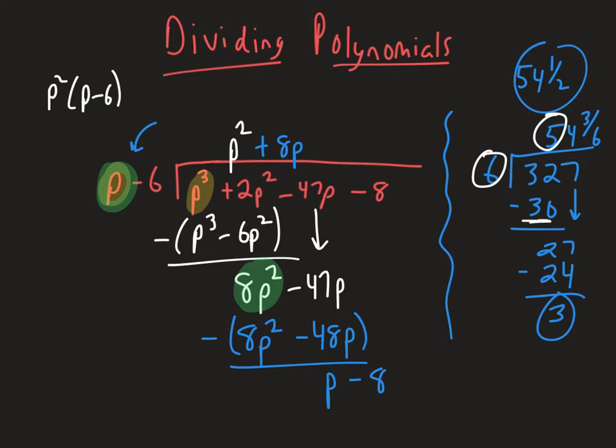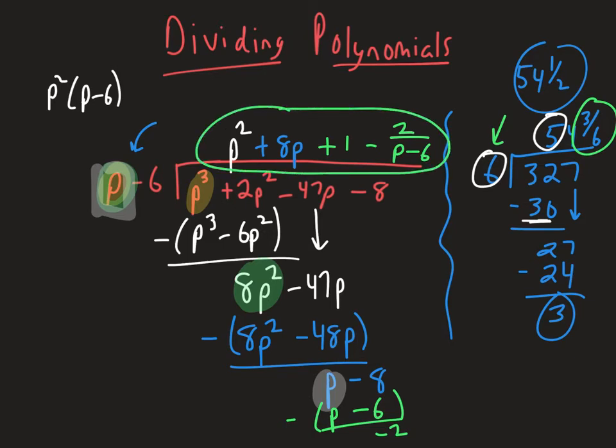And one more time, I'm going to see how many times does this p go into p. p goes into p one time. We'll multiply the 1 times the p minus 6, and we're going to subtract here one last time. So p minus p is 0. The negative 8 take away negative 6 should become negative 2, and that's going to be our remainder. And the way we write it is just like over here, we put it over the divisor. So we're going to have a minus, and it's going to be 2 over the p minus 6. And that's going to be our answer to the long division problem.